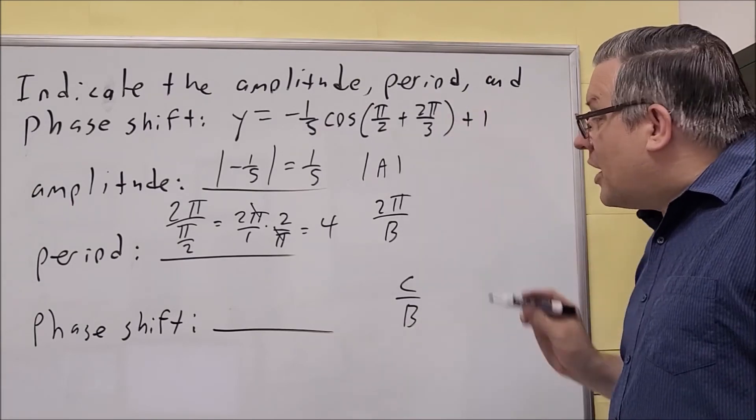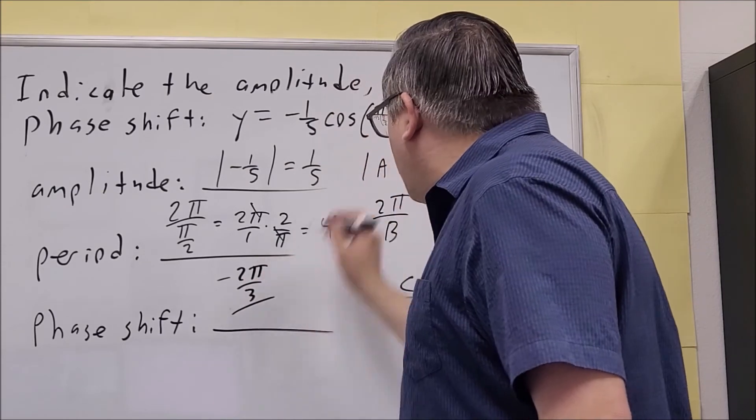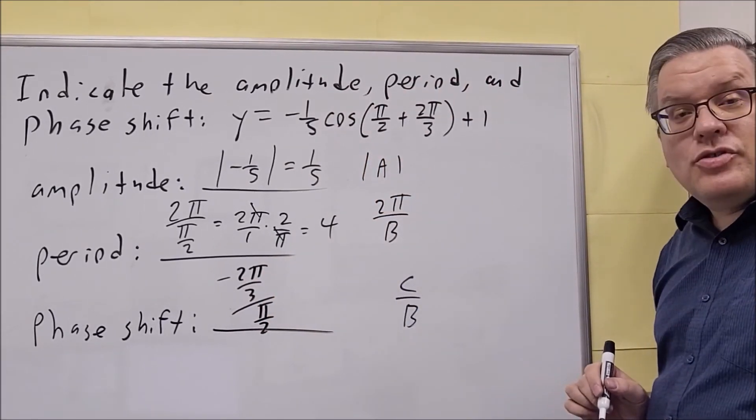Okay, so opposite sign of that is negative 2π over 3. We're dividing it by the number in front of the x. So we have divided by π over 2.